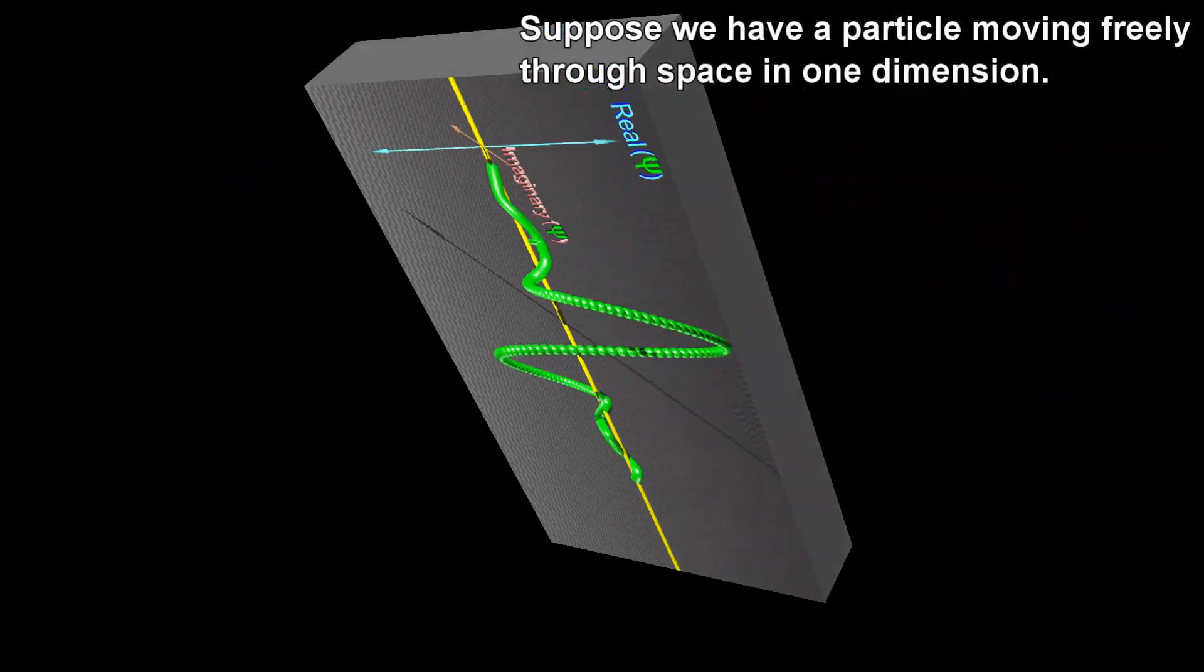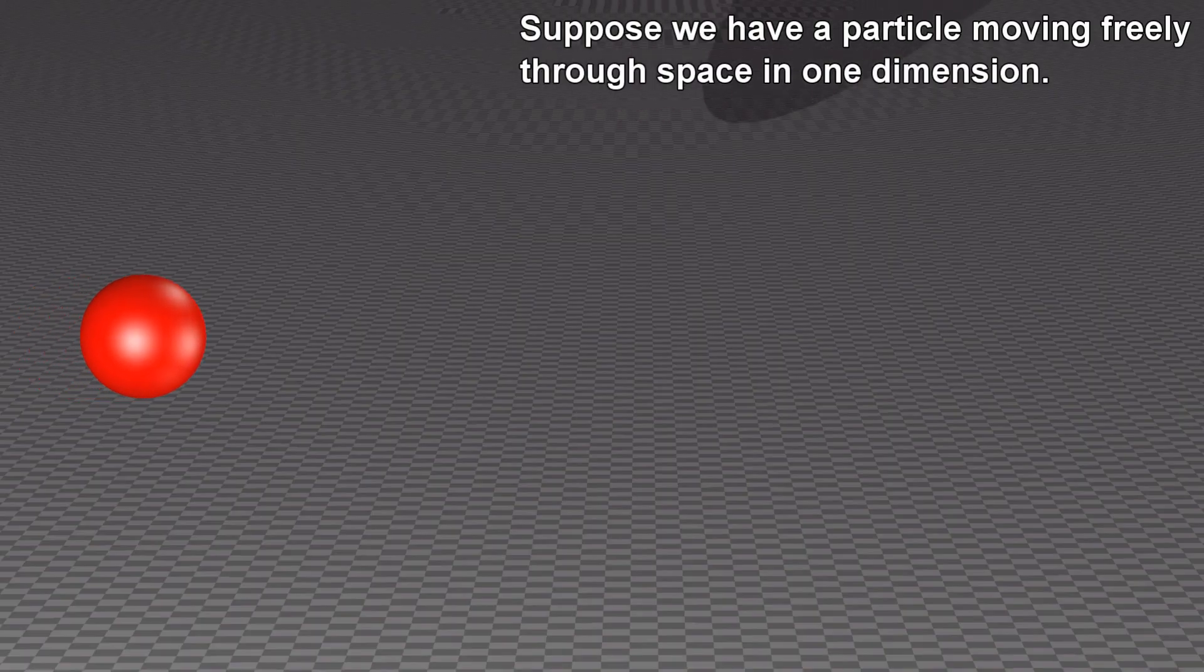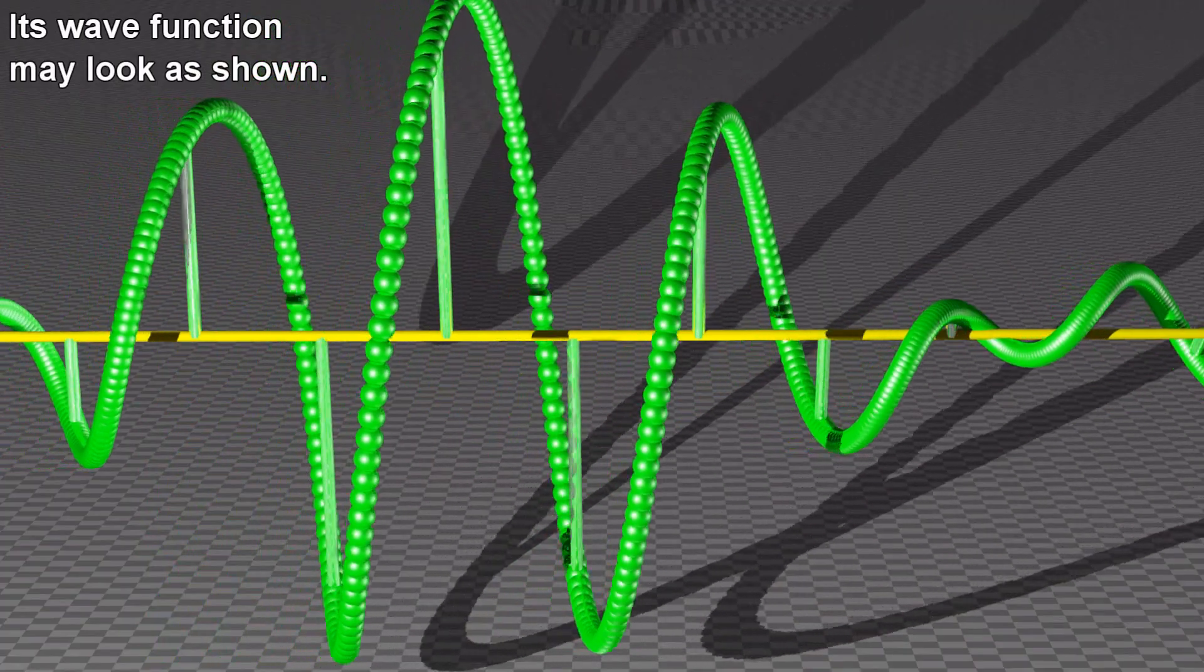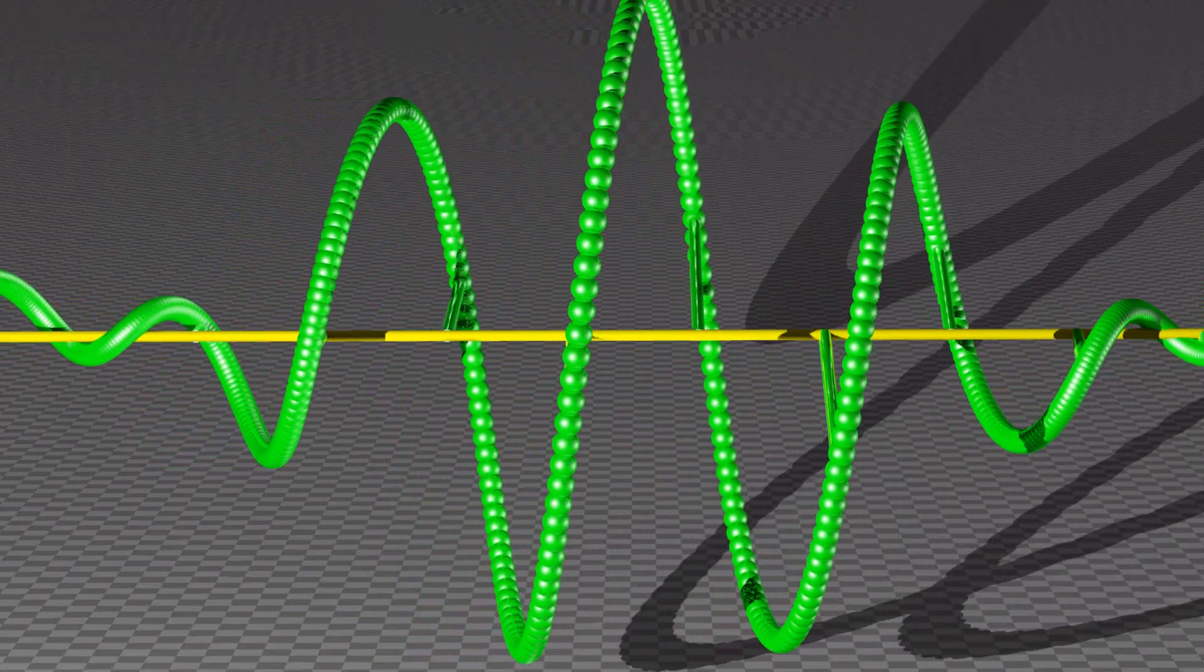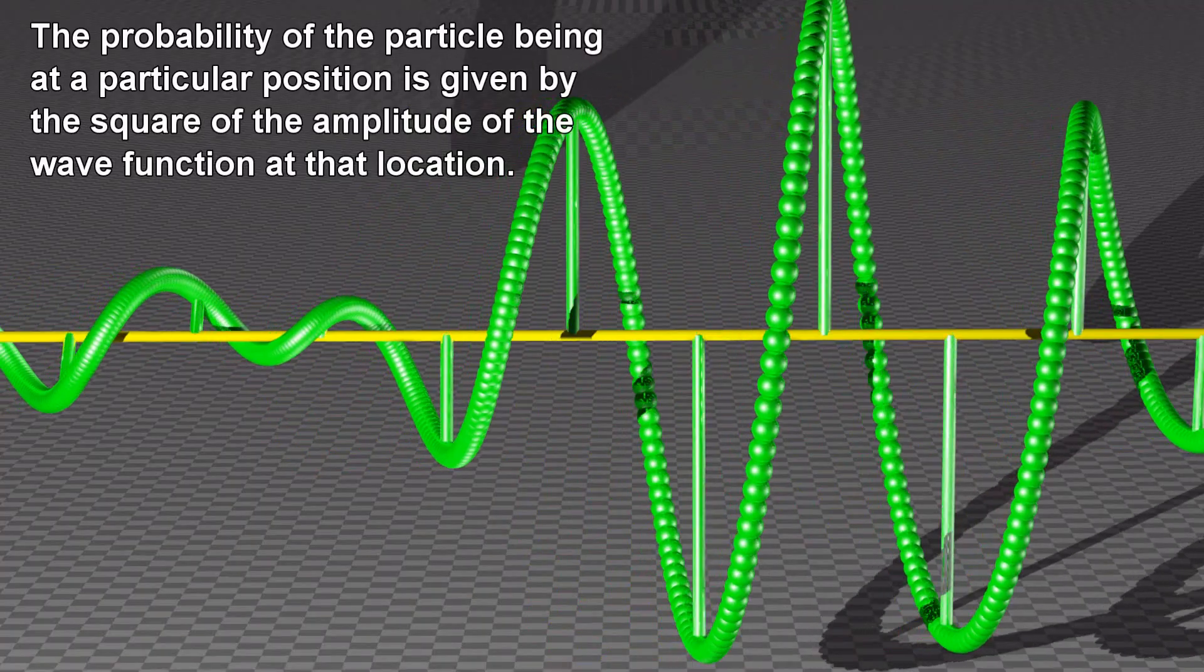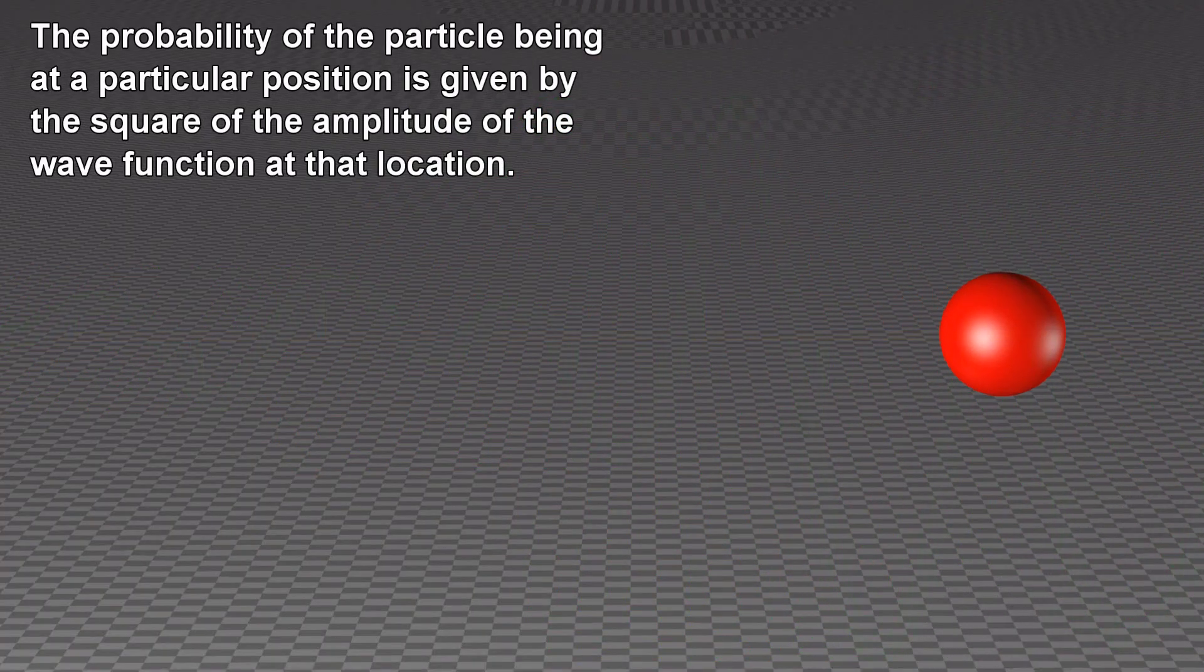Suppose we have a particle moving freely through space in one dimension. Its wave function may look as shown. The probability of the particle being at a particular position is given by the square of the amplitude of the wave function at that location.